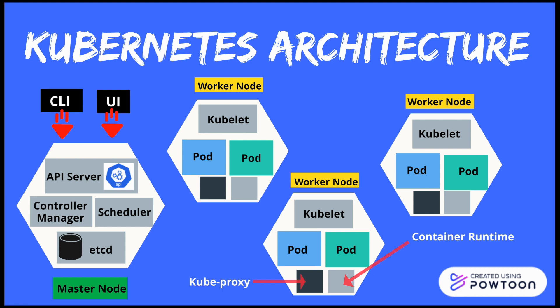The third component is the scheduler. When the client requests to schedule a pod via the API server, the scheduler decides which worker node is best suited to deploy the pod based on available resources. If there are no suitable nodes, the pod will be in a pending state until a suitable worker node is found. The fourth component is etcd, a key-value store where the state of the cluster is stored — it backs up all cluster data.